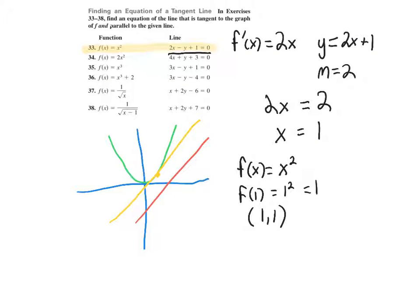So now what we are going to do is we have our slope, which is 2. We have our point, which is 1, 1. So now we are just going to plug it into our point slope form and get the equation.